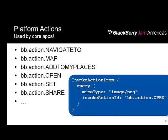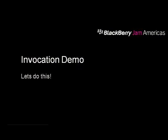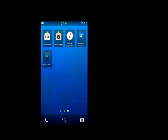That brings us to the invocation demo. The sample is available on blackberry.github.com — you can download and reuse the code. I have five applications here; pay attention to the top-left two: invoke client and invoke target. The target actually registers multiple targets, which we'll see as we go through the demo.